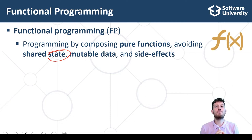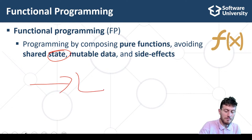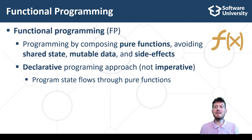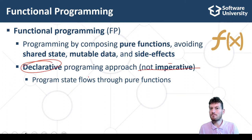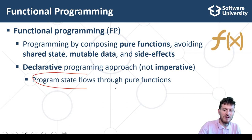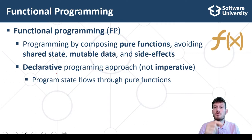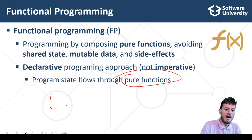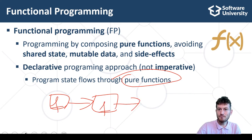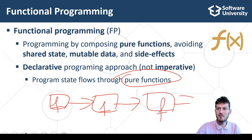Functions only access their input arguments and return output. Functional programming is a declarative programming approach, not imperative. Instead of describing an algorithm how to do something step by step, functional developers describe the result by functions and compositions of functions. The program state flows through pure functions, where one function passes output data as input to another function.